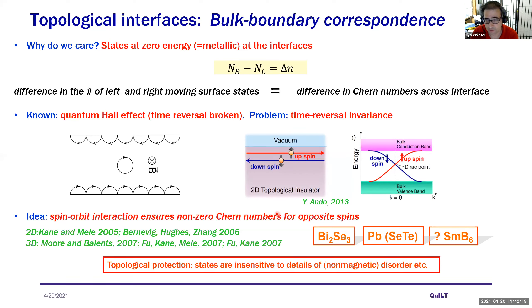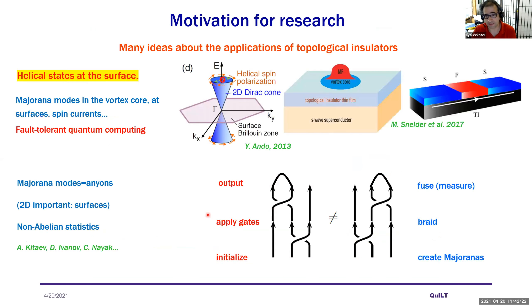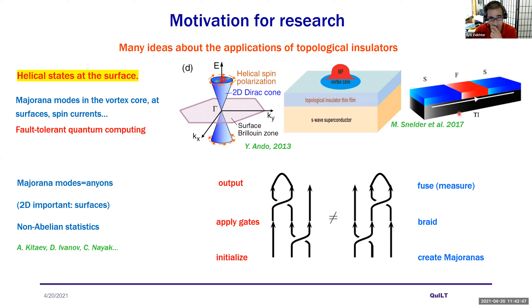Systems with these protected surface states are called topological insulators. Their surface states are helical. If proximity-coupled to a superconductor, they host Majorana modes at the centers of vortex cores. Placing a ferromagnetic layer between two superconductors on top of a topological insulator yields Majorana modes at the edges of that intermediate region — and all of this promises topological quantum computing.